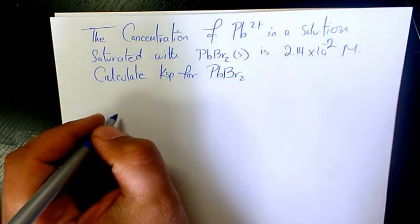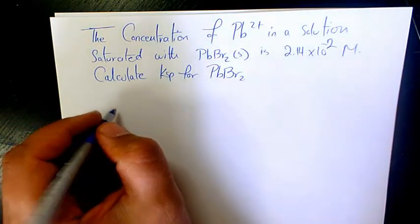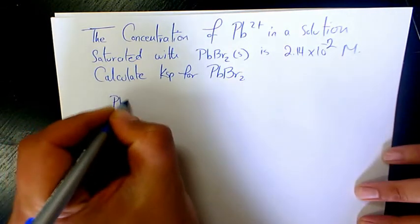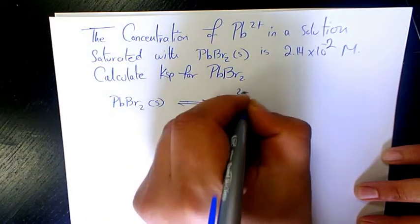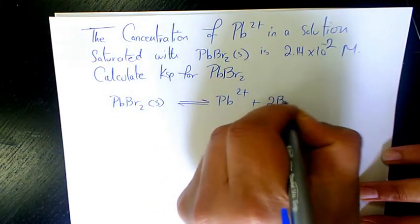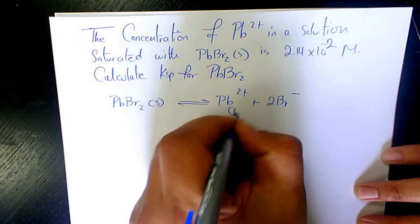So what we need to do here, we have this salt, PbBr2. When it dissolves, it's going to produce Pb2+ plus 2Br-, both in aqueous phase.